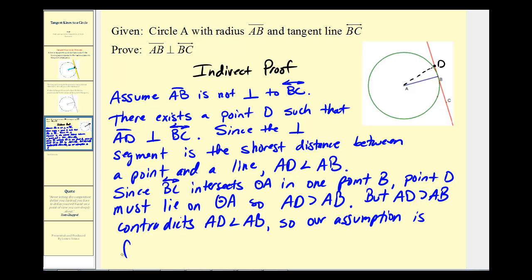Remember, our assumption was that segment AB is not perpendicular to line BC. Now that we've contradicted our assumption, we have our proof. Therefore, segment AB must be perpendicular to line BC, where AB is the radius of the circle.